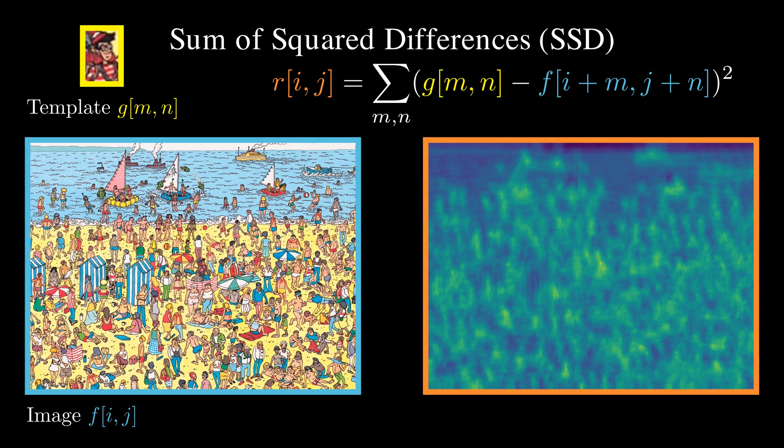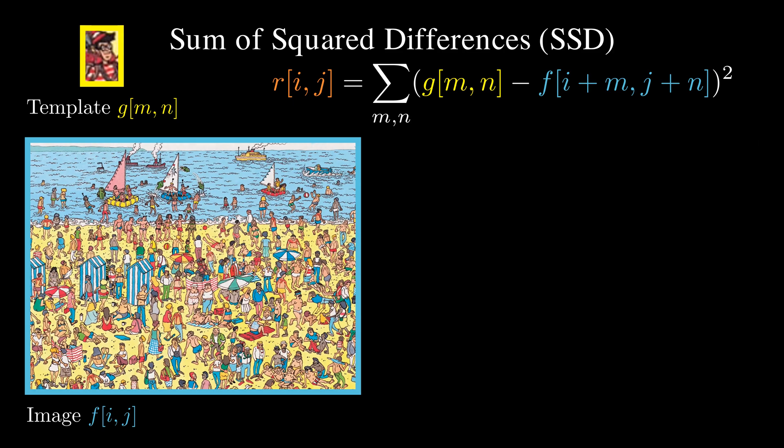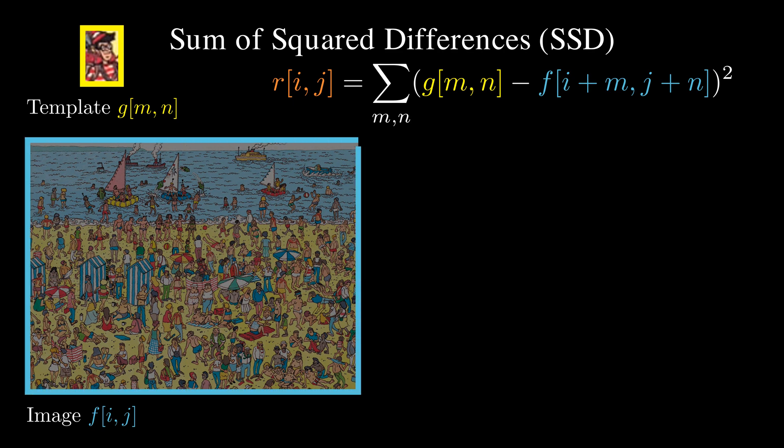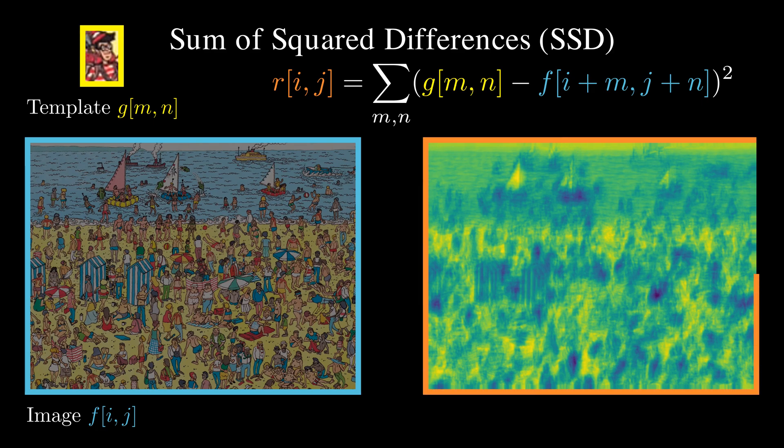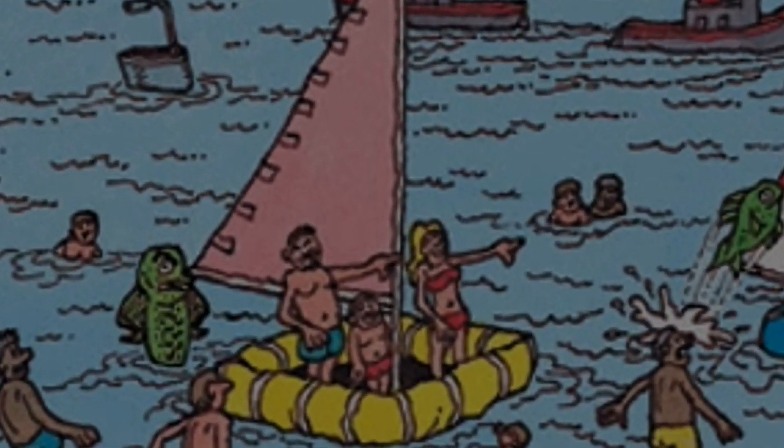But what if lighting conditions change? What if the image was captured with different exposure settings? SSD-based matching struggles in such cases and fails to find Waldo.